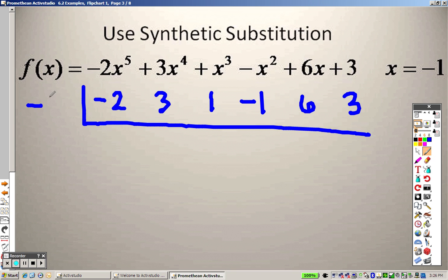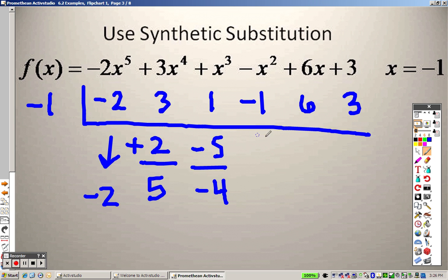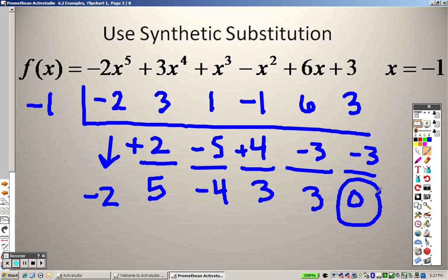it needs to go down the line. If you're missing any, you put a zero in its spot. Now this negative 1 here goes on the outside, and here's basically how it works. You drop the negative 2 down. Negative 2 times negative 1 is positive 2, and then you add those to get 5. 5 times negative 1 is negative 5, and you add those to get negative 4. Negative 4 times negative 1 is positive 4, and you add those to get 3. 3 times negative 1 is negative 3, and we add those to get 3. 3 times negative 1 is negative 3, and we add those to get 0. So your answer when you plug in a negative 1 is 0.